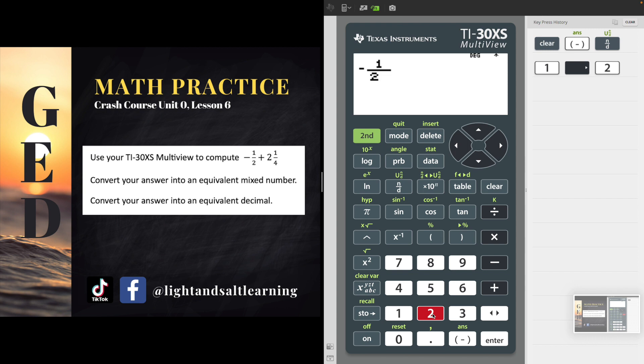So if your calculator is looking different than mine, it doesn't have that nice flat horizontal fraction bar but it has a diagonal fraction bar, you're in the wrong mode. Go into mode and switch your calculator into math print mode. I'll wait.